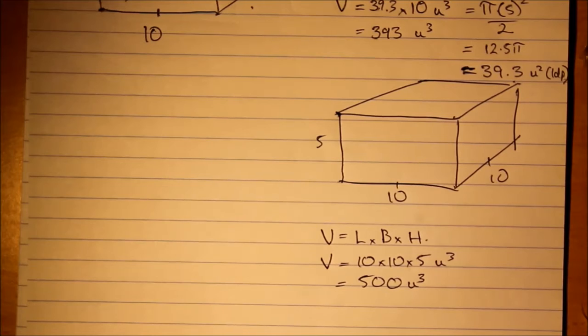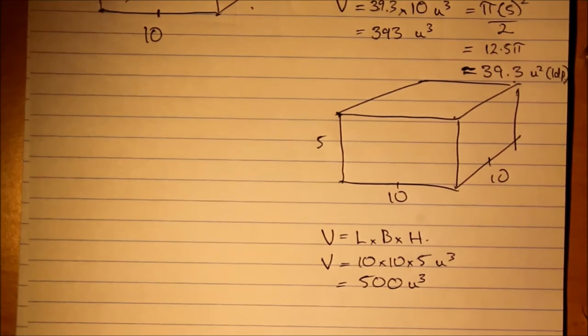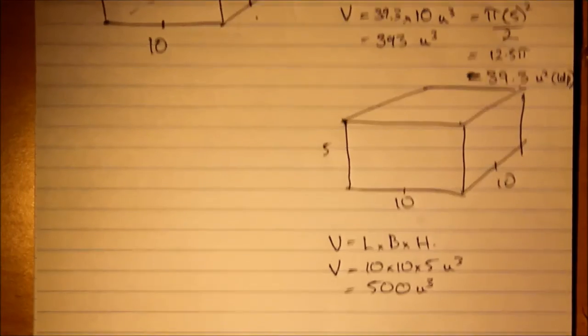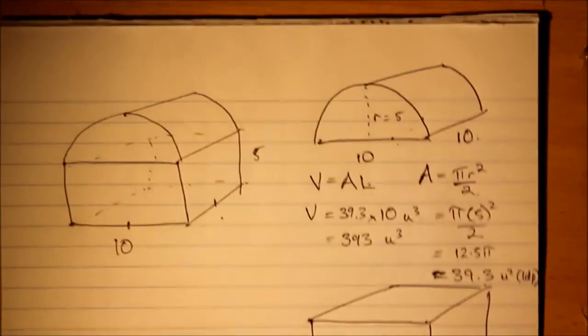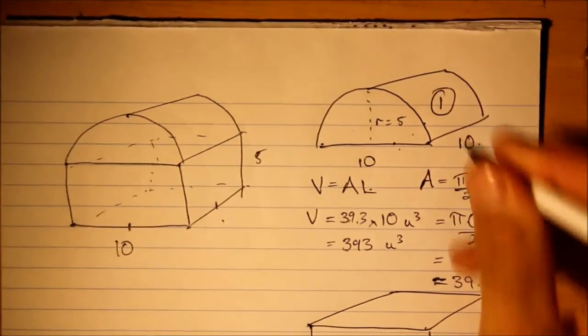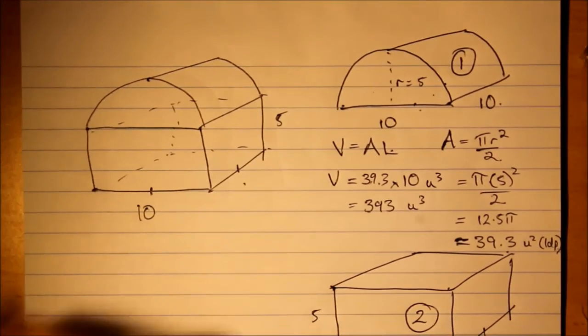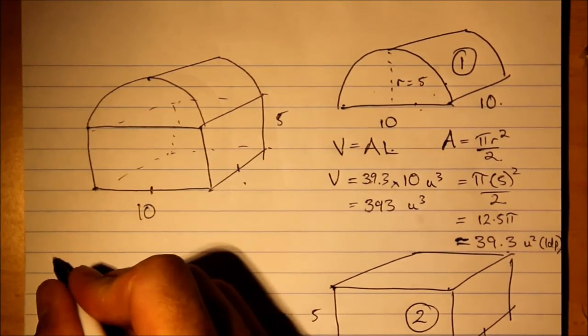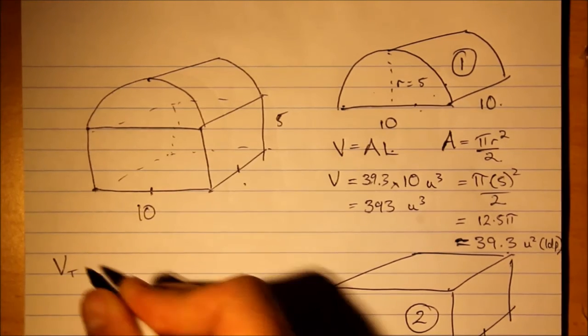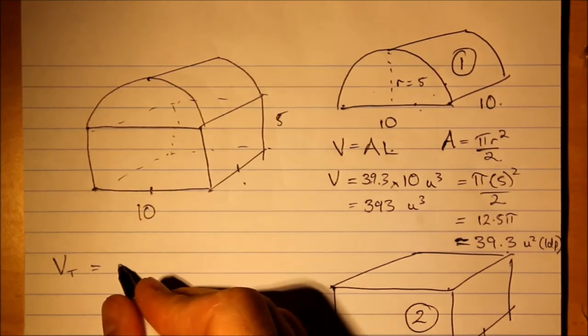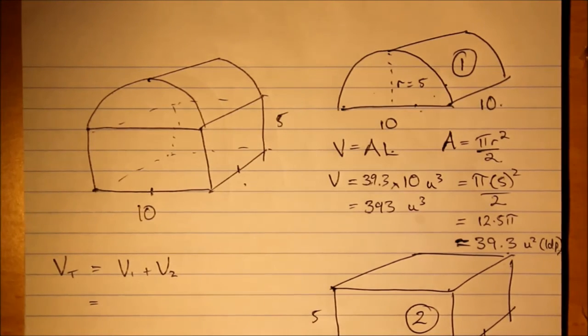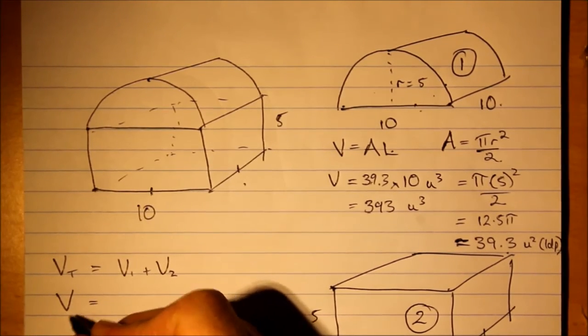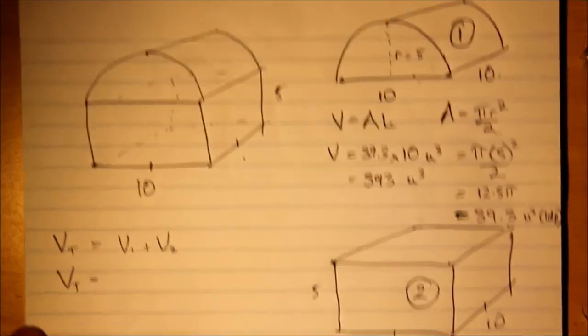And there you have the separate parts. So what would the composite solution be? Well, you can label parts of this 1 and 2, so volume total is volume 1 plus volume 2 which is 393 plus 500 units cubed which is 893 units cubed all together.